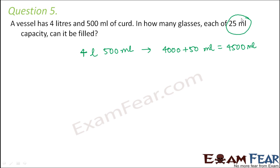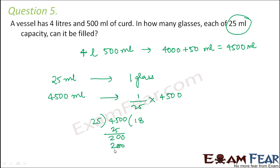Now the capacity of each glass is 25 milliliters. That means 25 milliliters is the capacity of one glass. So 4500 milliliters would be the capacity of 4500 divided by 25 glasses. So let us divide 4500 by 25. So this would be 25. So the remainder will be 20. You have a 0 here. So this would be 8. And so the final remainder is 0. So basically 180 glasses. So in 180 glasses, this entire volume of curd can be filled.